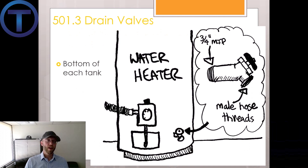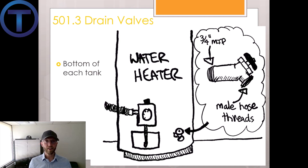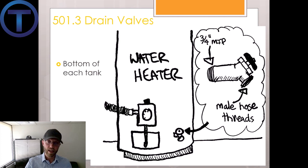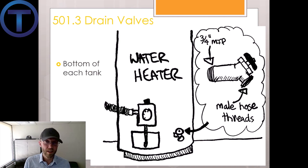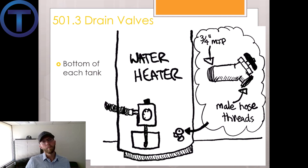Section 501.3 covers drain valves. Every water heater should have some way to drain it down when needed, and it is noted that the drain should be on the bottom of the water heater. It has to have a three-quarter inch MIP connection to the tank and a male hose-threaded connection on the other side of the valve so we can hook up a hose and convey the water to a safe location. Those cheap plastic water heater drains — are they up to code? Yes, according to those simple requirements, though they're horrible to deal with. A mark of a good water heater is a brass drain valve.